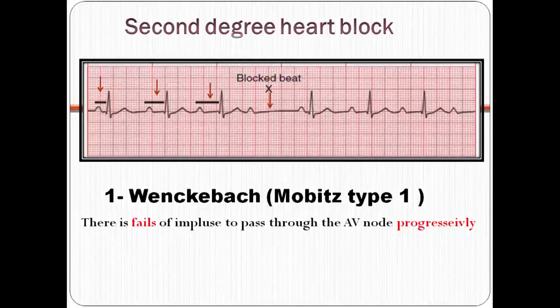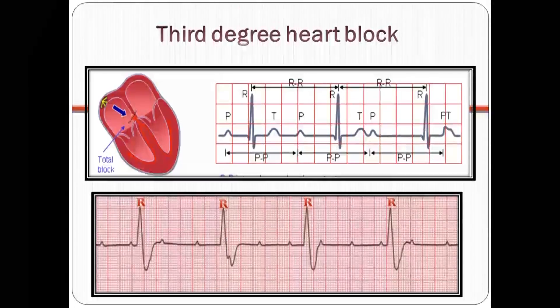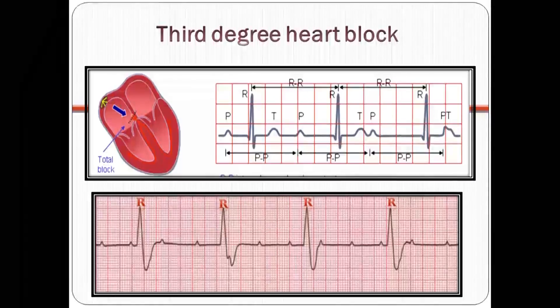For second degree heart block, we have Mobitz type 1 and Mobitz type 2. Mobitz type 1 has progressive lengthening of the PR interval, then failure of conduction of an atrial impulse. Mobitz type 2 has atrial contraction without ventricular contraction, so there is a P wave without QRS complex. Third degree heart block has no conduction of impulses from atrium to ventricle at all — no relationship between P waves and QRS complex, meaning atrial and ventricular contractions are not synchronized.